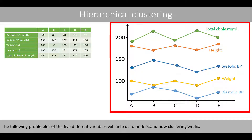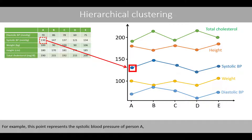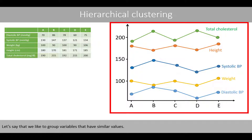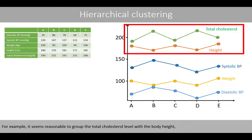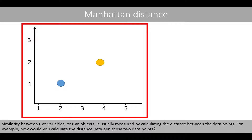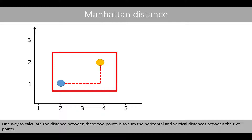The following profile plot of the five different variables will help us understand how clustering works. For example, this point represents the systolic blood pressure of person A, whereas this point represents the systolic blood pressure of person B, and so forth. Let's say that we'd like to group variables that have similar values. It seems reasonable to group the total cholesterol level with body height, and the variables body weight and systolic blood pressure, because these pairs of variables have similar values. Similarity between two variables, or two objects, is usually measured by calculating the distance between the data points.